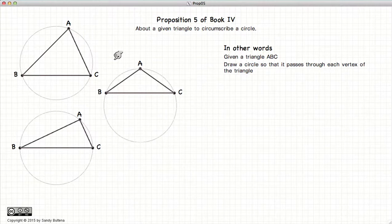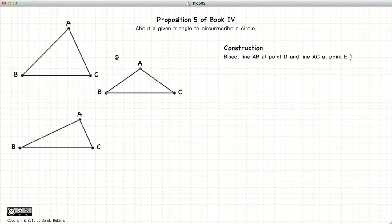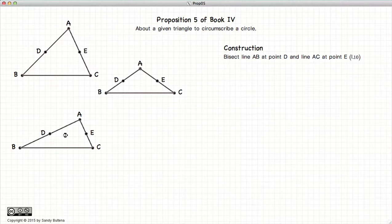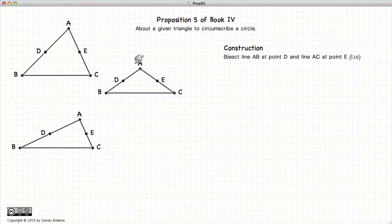So to do this, first we are going to bisect the line AB. Now I have three different triangles here for three different examples of the angles in the triangle and where the center of the circle hits. So for each of these three triangles, I have bisected the line AB at the point D, and I have bisected the line AC at the point E.